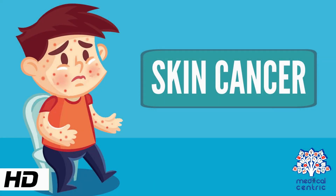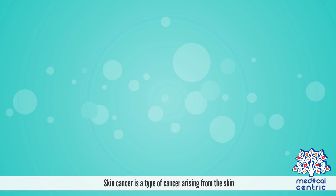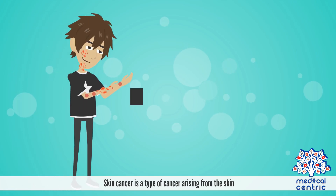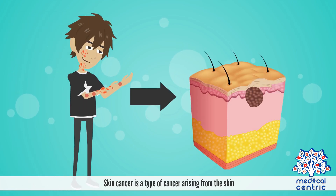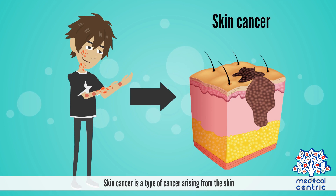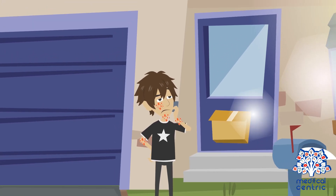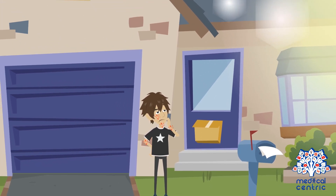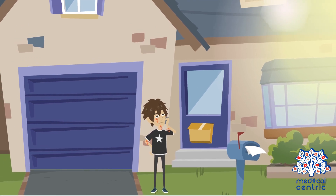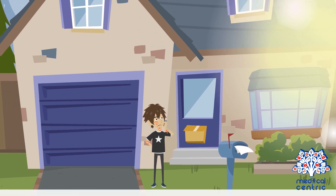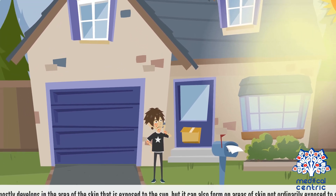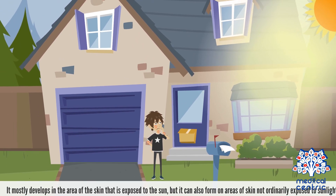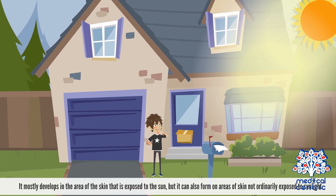Today's topic is skin cancer. Skin cancer is a type of cancer arising from the skin. It mostly develops in the area of the skin that is exposed to the sun, but it can also form on areas of skin not ordinarily exposed to sunlight.